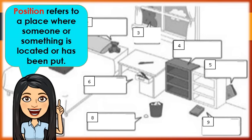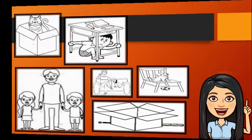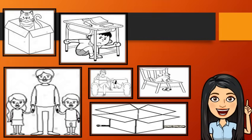When we say position, it refers to a place where someone or something is located or has been put. There are words that we use in describing the position of an object.